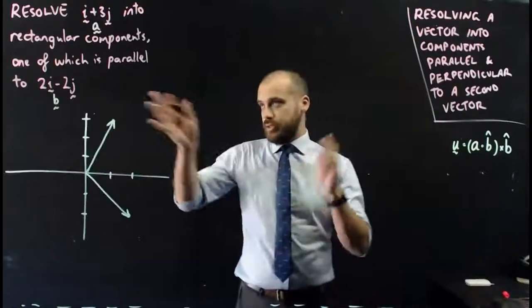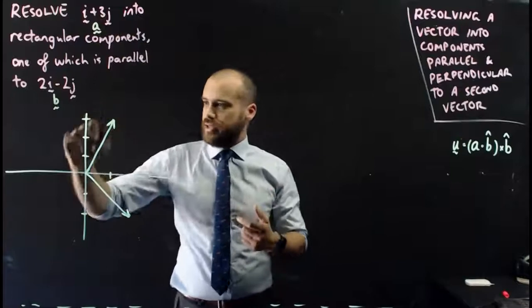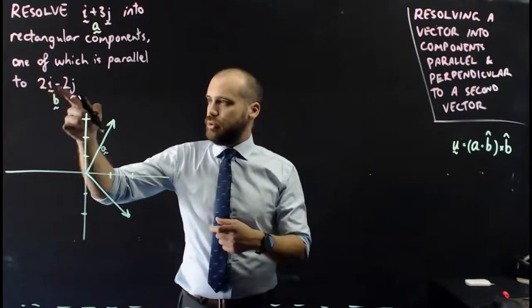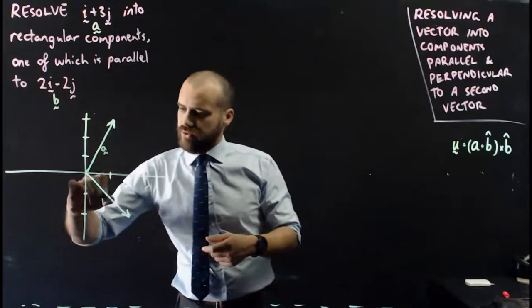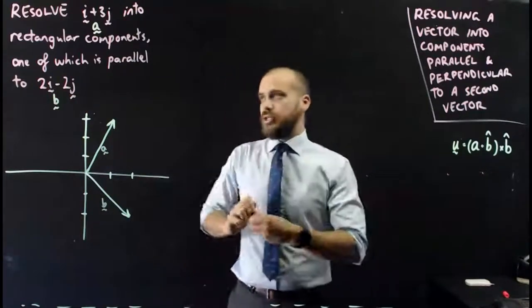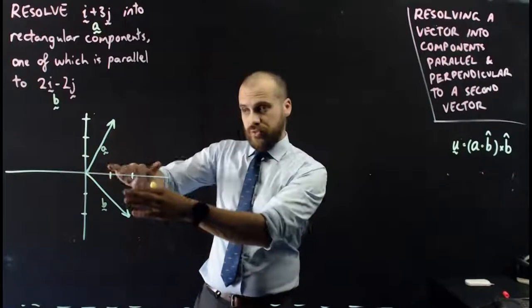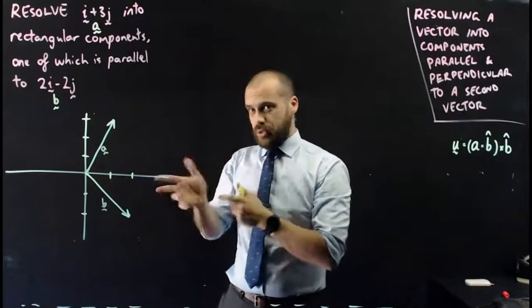Let's draw a picture. All right, so there's our two vectors. I'll call i plus 3j vector a, so that's vector a there. And this one is 2i minus 2j, so that's vector b. Now, we need to be able to describe a, the vector a, in terms of b and another vector that's perpendicular to it.